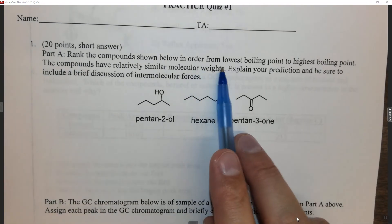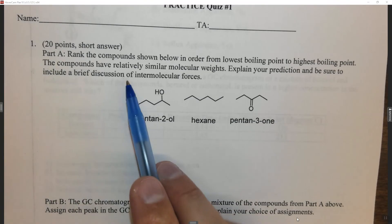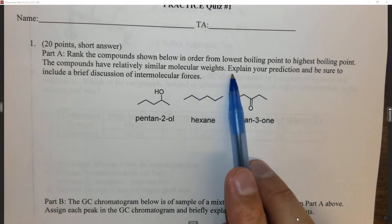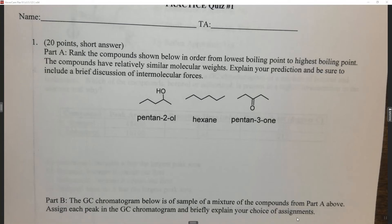It says rank the compounds below in order from lowest boiling point to highest boiling point. The compounds have relatively similar molecular weights. Explain your prediction and be sure to include a brief discussion of intermolecular forces. What you're going to notice as we go through this quiz is that this is all about the why — there are no questions like what temperature did the ethanol boil at, or how much ethanol you added. What you need to understand is why.